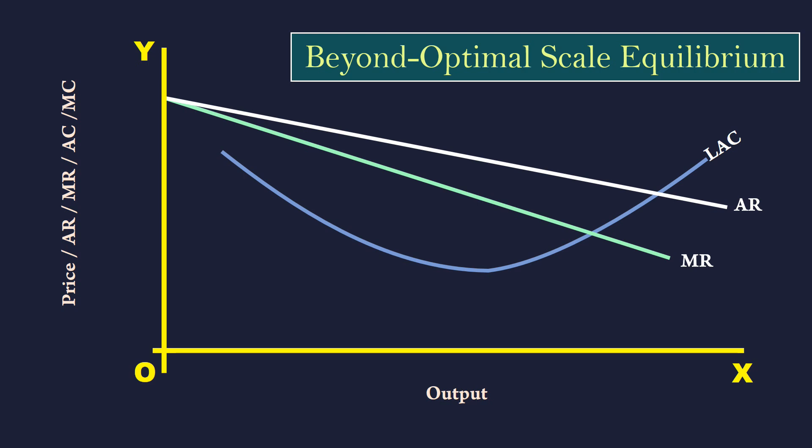LMC cuts the MR curve from below at E. At E, the plant's short run marginal cost curve SMC also cuts the MR curve from below. Moreover, the SAC is tangent to LAC at point F.